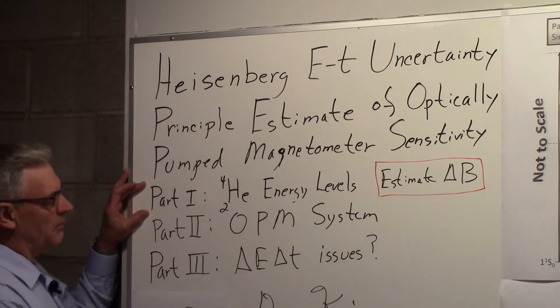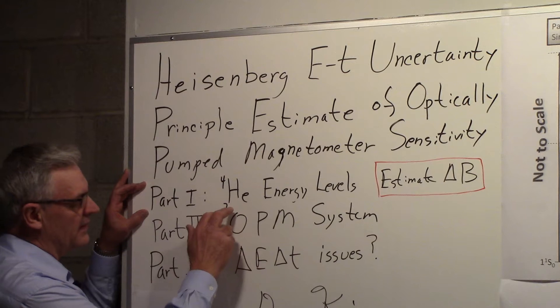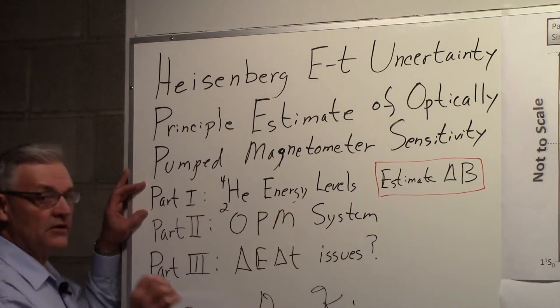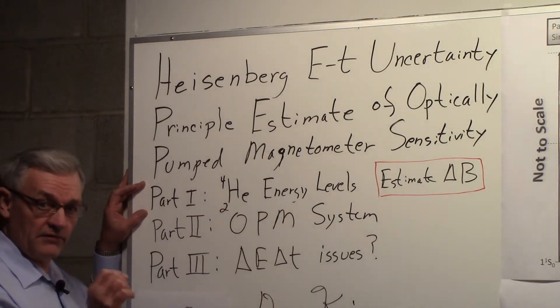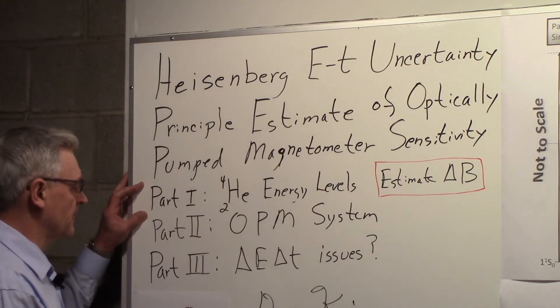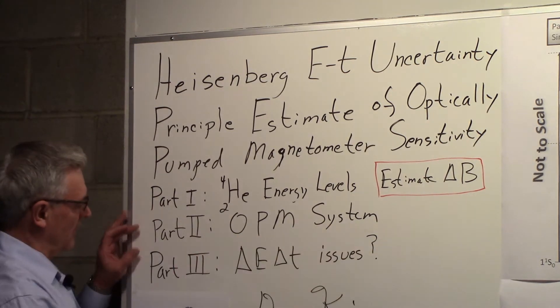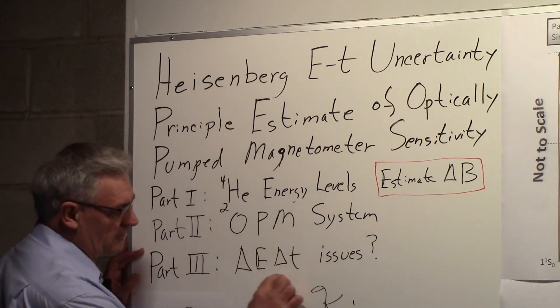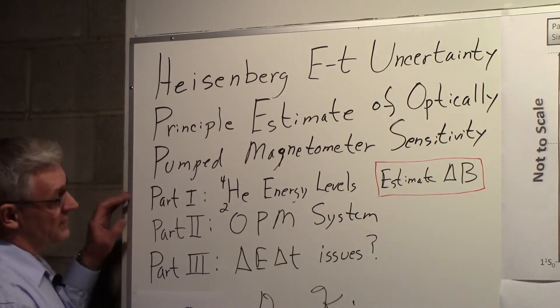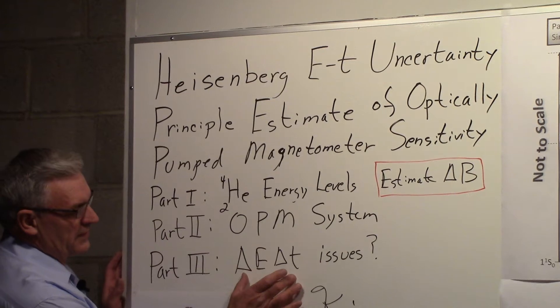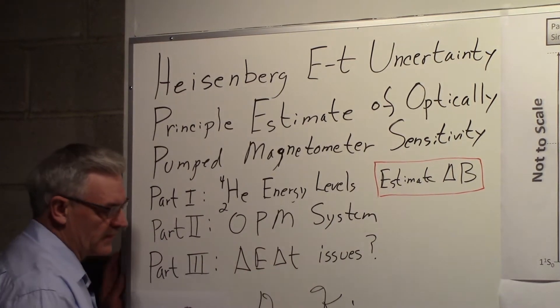We're going to do this in three parts and we might add a fourth part later. In part one we're going to talk about the helium-4 energy levels because we're going to concentrate on the helium-4 optically pumped magnetometer. In part two we'll talk about an actual system and in part three we'll talk a little bit about some of the issues associated with using Heisenberg energy-time uncertainty principle.